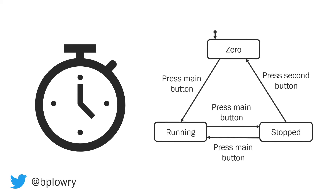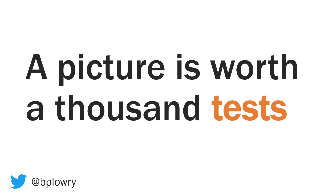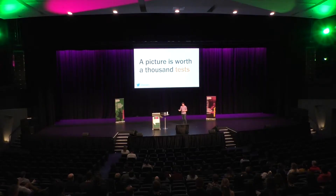Now that we've got these states, we essentially turn it into a diagram and draw arrows for how it works together. You can see we've got a zero state — press the main button and we end up in a running state. The great thing about this diagram is you can show it to other people and figure out really early if your assumptions are wrong or how the system should behave. You can show it to your product owners, business analysts, testers — anyone on your team can have an opinion. A picture is worth a thousand words, or in this case, a thousand tests.